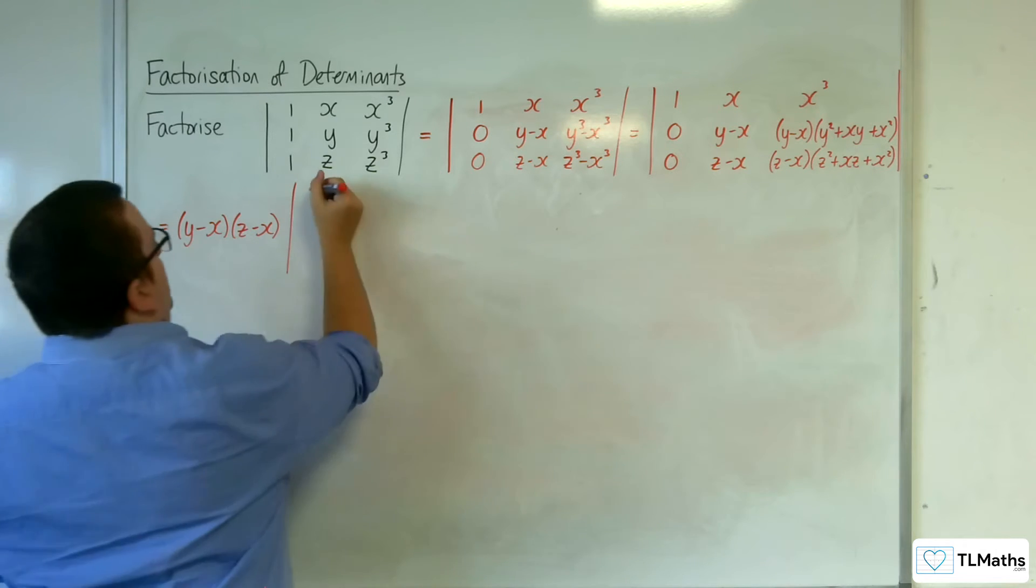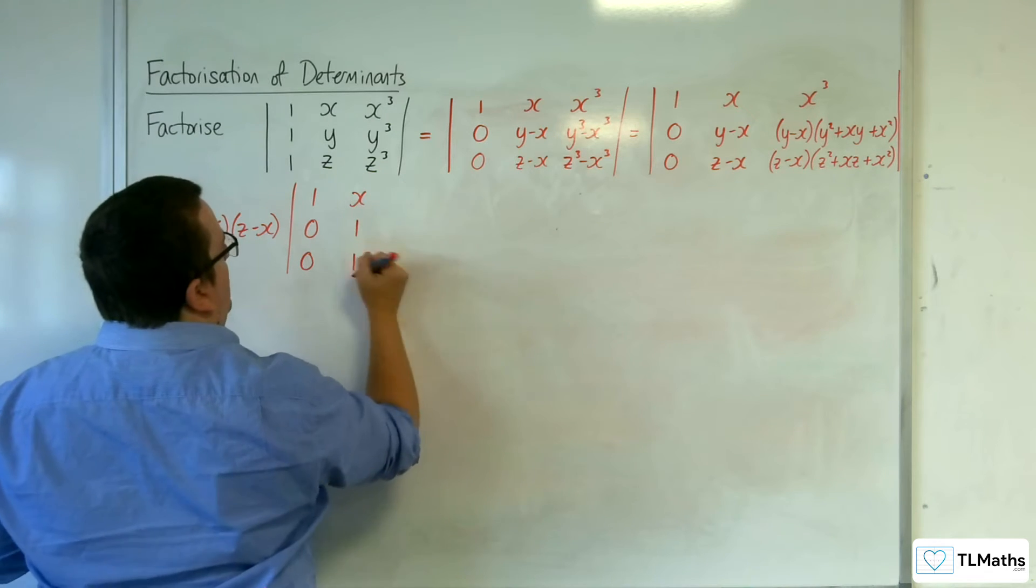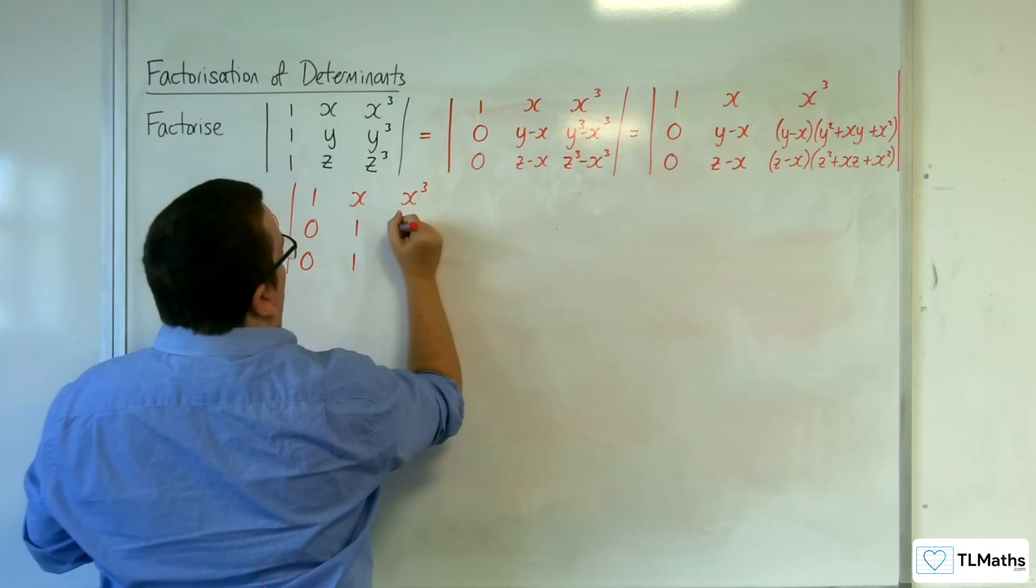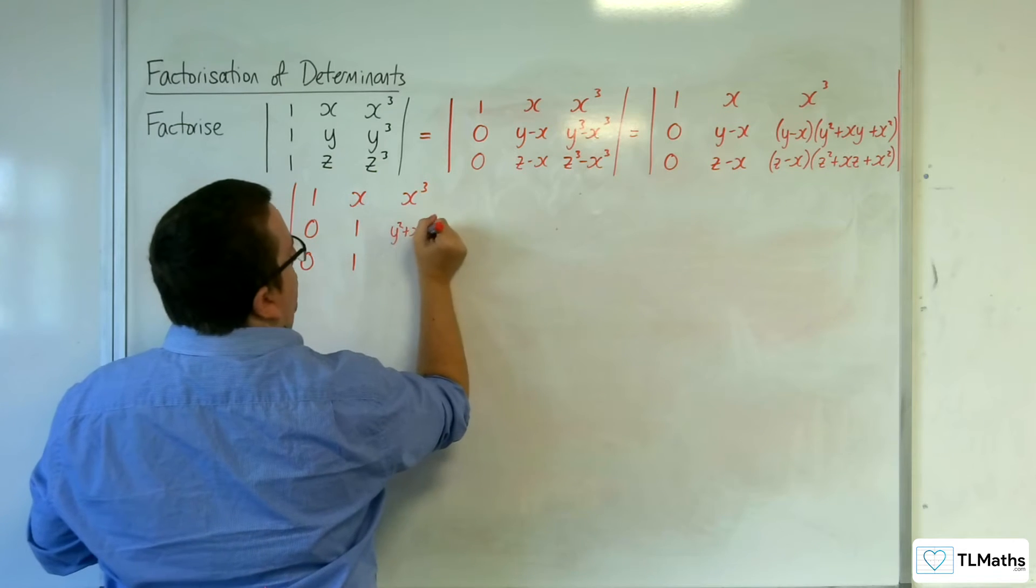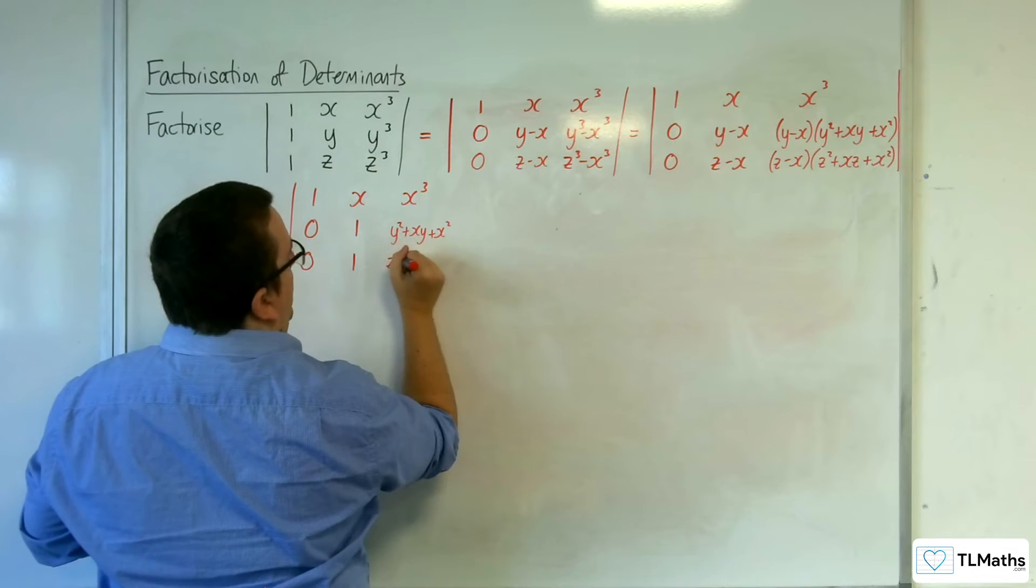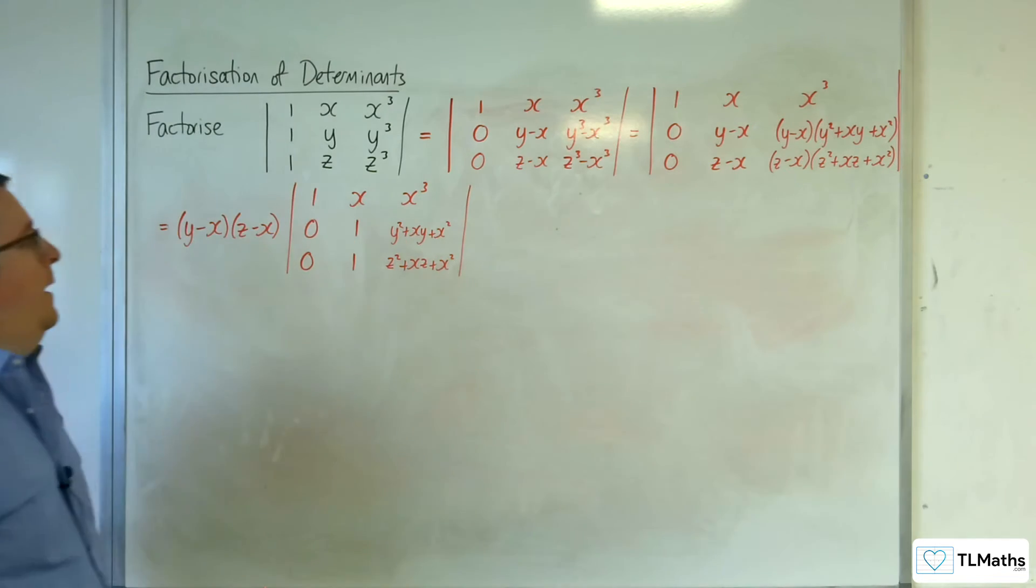Then I've got the 1, 0, 0. I've got the x. I've now got 1 and 1. And I've got the x cubed. And I've got y squared plus xy plus x squared, and z squared plus xz plus x squared. So, this is looking very good so far.